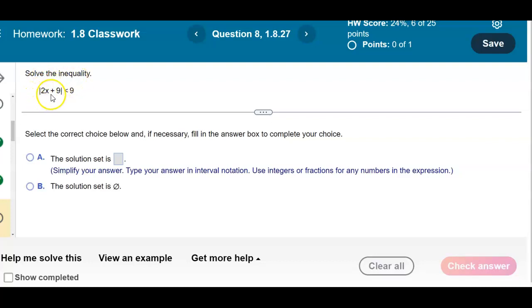Solve the inequality. We have the absolute value of 2x plus 9, which is less than 9.